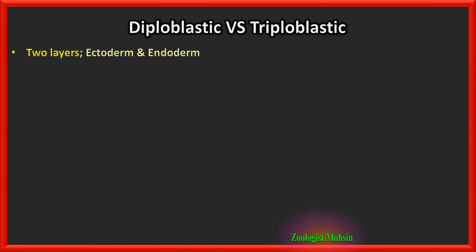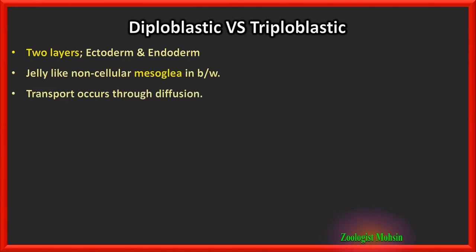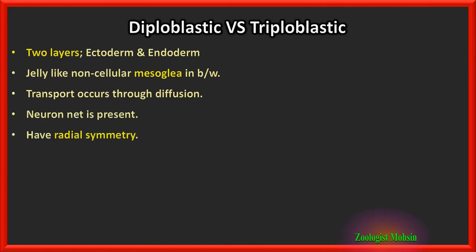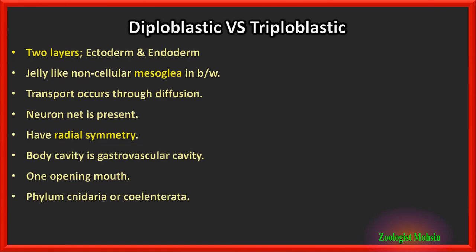In diploblastic organisms there are only two layers — ectoderm and endoderm. A jelly-like non-cellular mesoglia is present between them, especially in coelenterates. Transport occurs through diffusion because there is no transport system. A neuron net is present but there is no CNS. They have radial symmetry and the body cavity is a gastrovascular cavity or archenteron with one opening — the mouth. Phylum Cnidaria or Coelenterata is the best example for diploblasts.